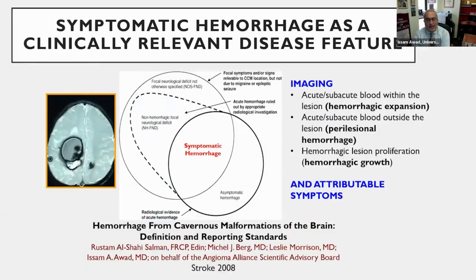We combine a clinical definition as well as an imaging definition to define a symptomatic hemorrhage. When you have a symptomatic hemorrhage in a cavernous angioma, that has to have resulted from a change on imaging as well as a new symptom.